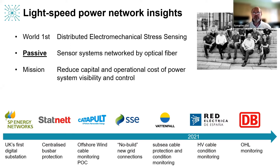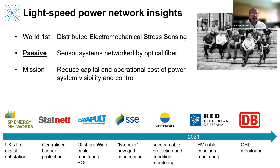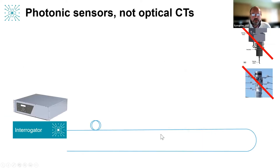Our mission is to do two things: reduce the capital cost of instrumentation for complex power systems and improve their visibility and real-time control, ultimately providing better information for smarter asset management decisions. We're already working with Scottish Power and SSE Networks in the UK, transmission operators like Statnett and Red Eléctrica in Europe, and in offshore wind and railways. They all have one thing in common — providing real-time visibility of remote assets that are so far away or inaccessible undersea or underground that you can't easily find out what's going wrong.